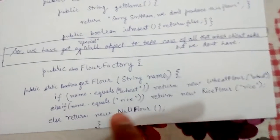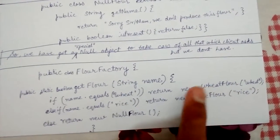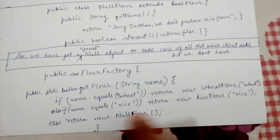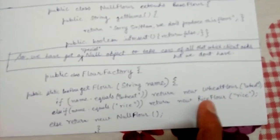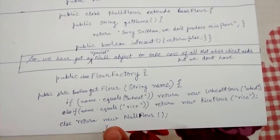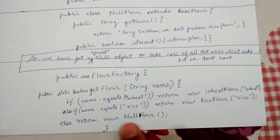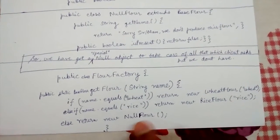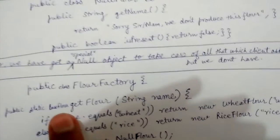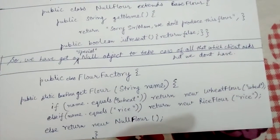If the user passes 'wheat' in the string name, we return a WheatFlour instance. If the user asks for 'rice,' we return a RiceFlour instance. If they ask for anything else, we return the placeholder instance—the NullFlour instance. The return type is BaseFlour, so by the Liskov Substitution Principle, it can point to any of these three.